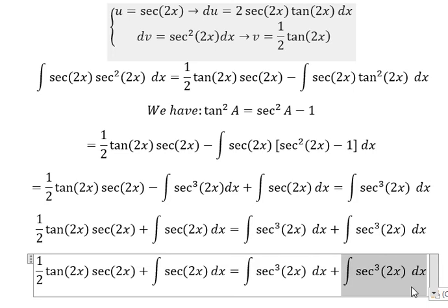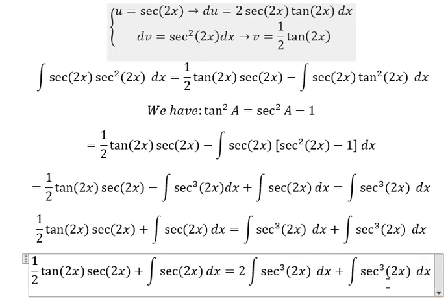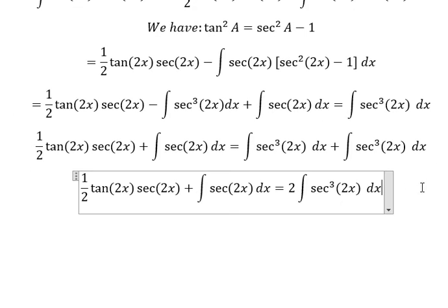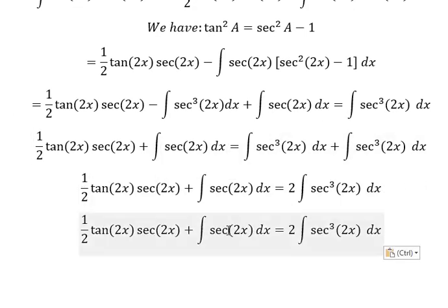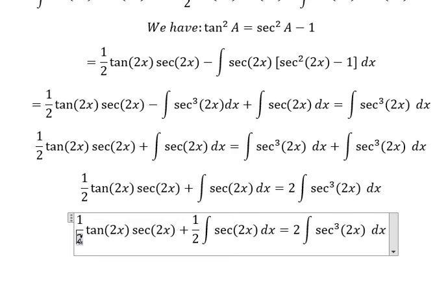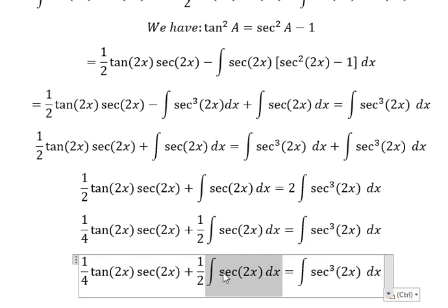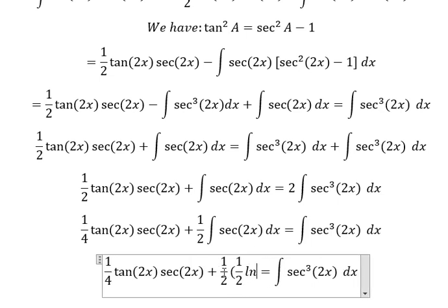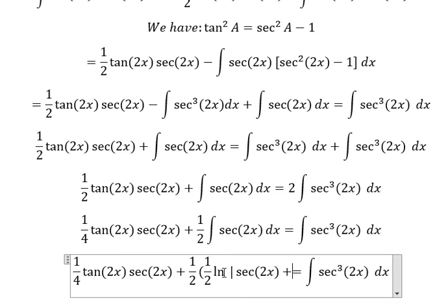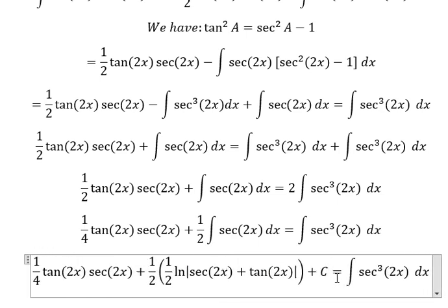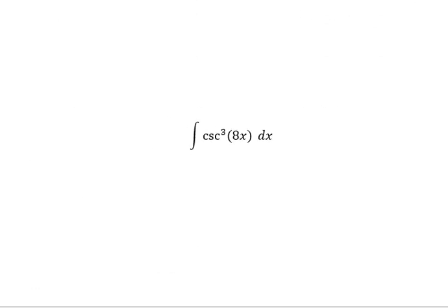This one plus this one, so we have number 2 times the integral. The integration of this one gives us (1/2)·ln|sec(2x) + tan(2x)|, and then we add C, the constant. This is the final answer. Now I will go to the next one.